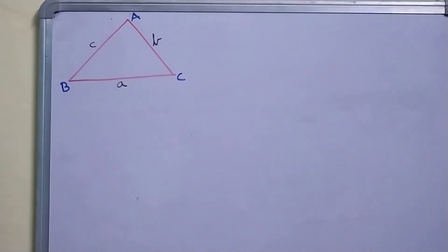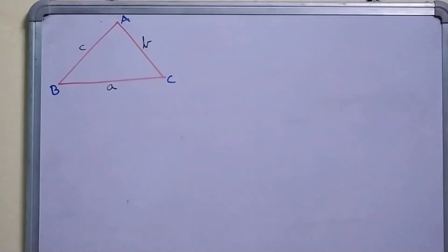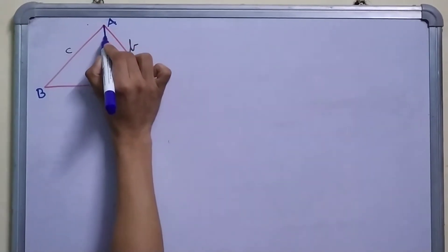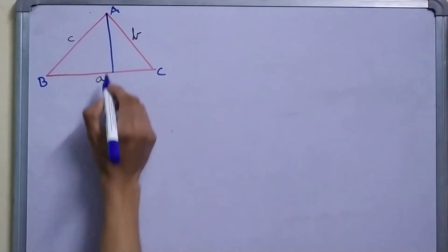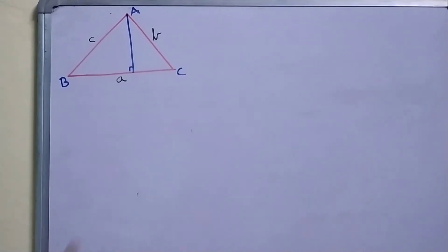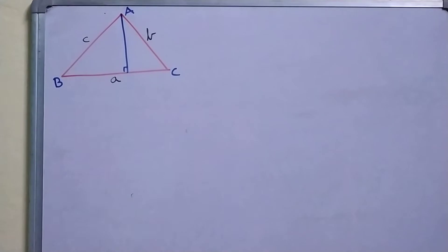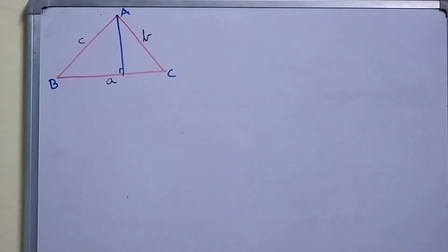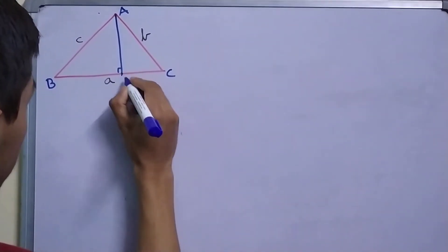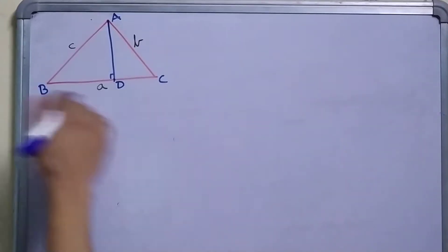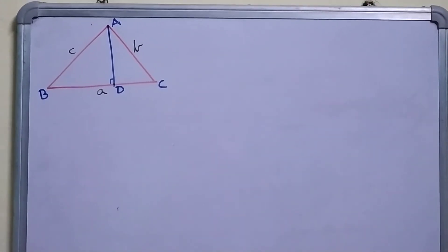Now we start off with a very interesting construction. We construct this length perpendicular to BC. Let me call this AD. So AD is perpendicular to BC. This is our construction.